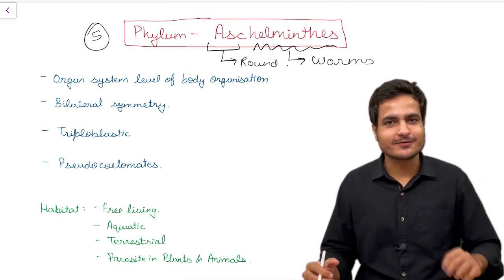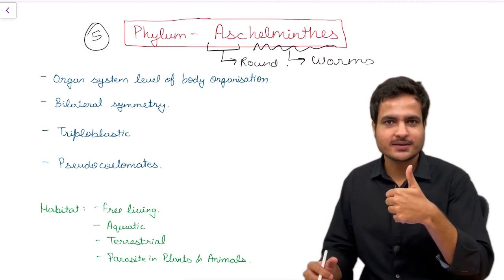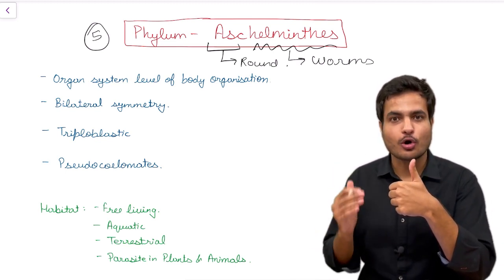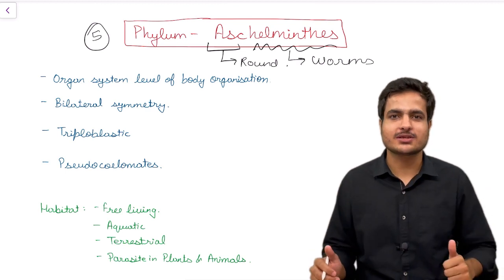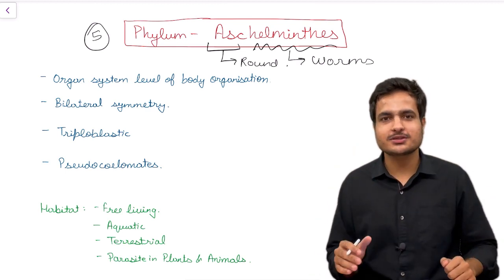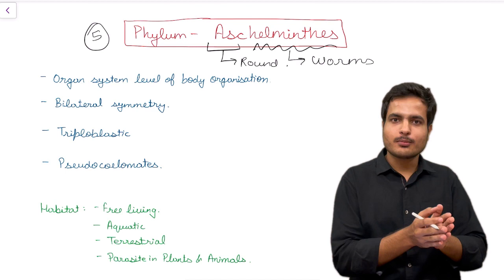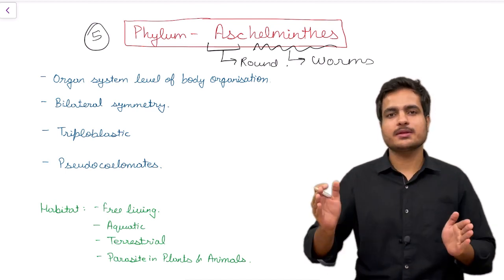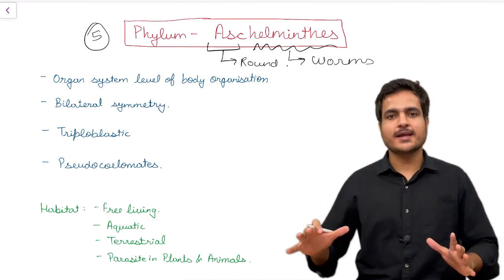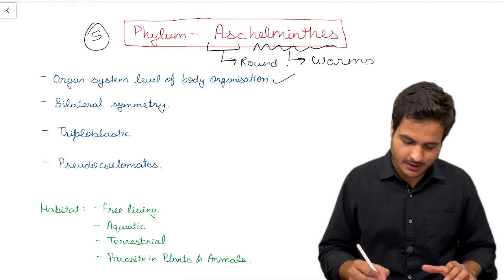Let's start with the four golden points. The first is organ system level of organization, and this is a characteristic feature because from the fifth phylum onwards, that is Aschelminthes onwards, every phylum will have organ system level of organization.